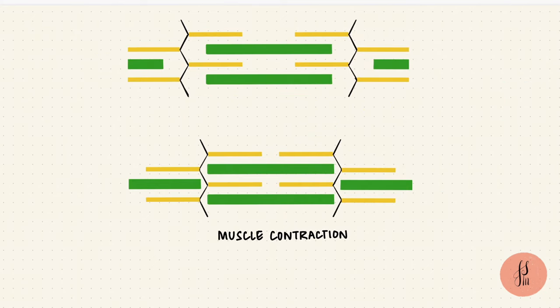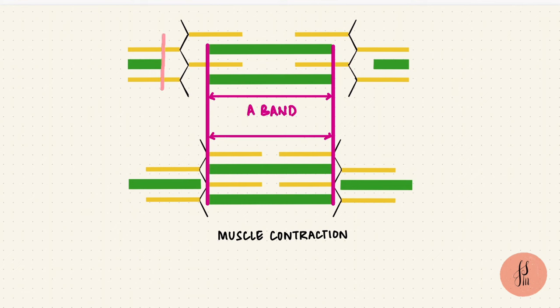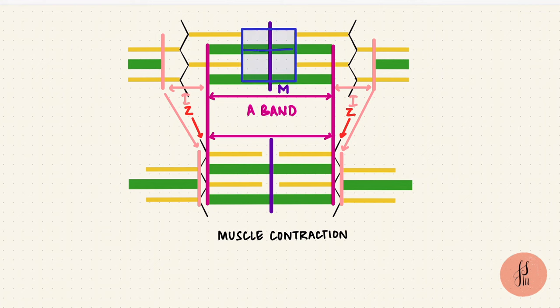So when the sarcomere shortens, what happens to the bands? The A-band is the thick filament, which doesn't move, so it doesn't change in dimensions. The I-band, on the other hand, will shorten. The Z-discs will come closer together. The M-line won't move and the H-zone will shorten.